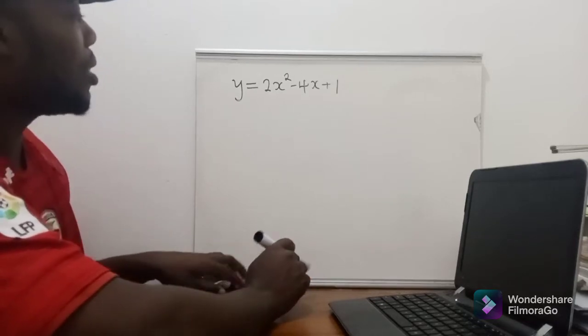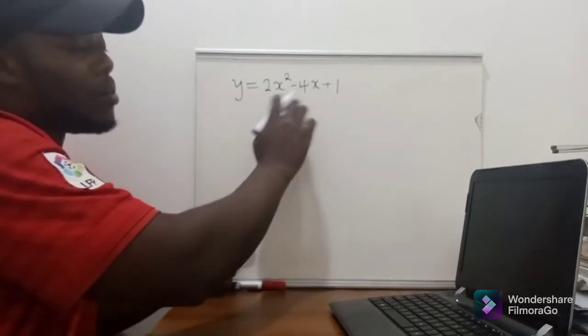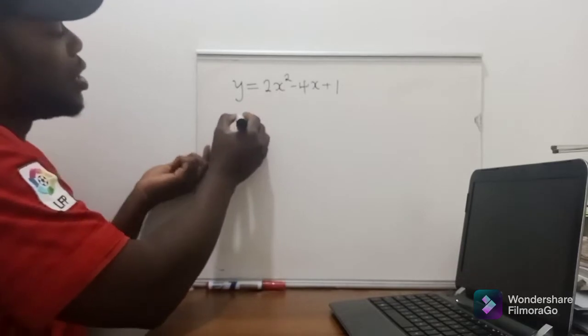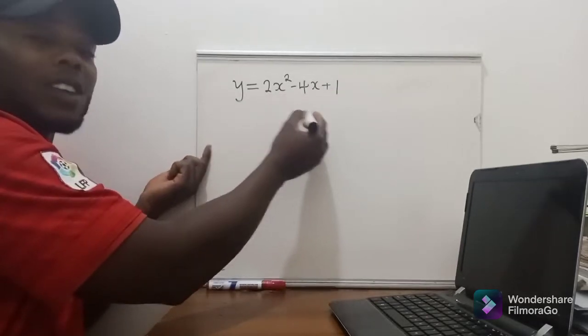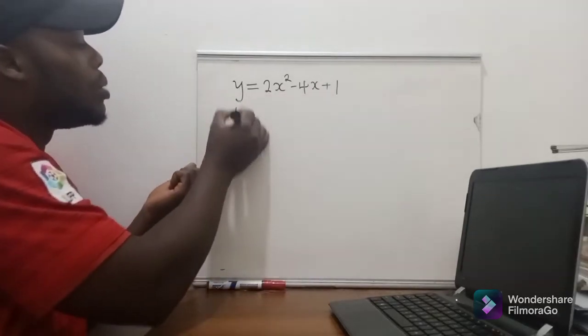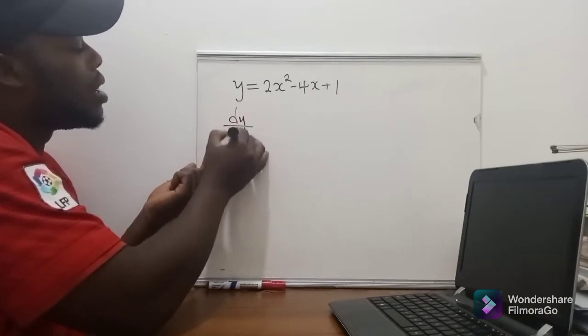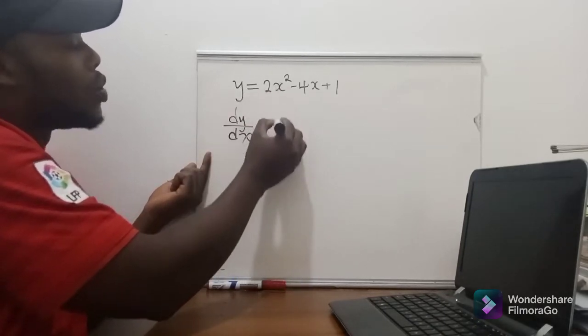So here's the thing, when you want to find the turning point using calculus, you just find the derivative of this and then equate it to zero. So it will be dy/dx, we are expecting x will be equal to...